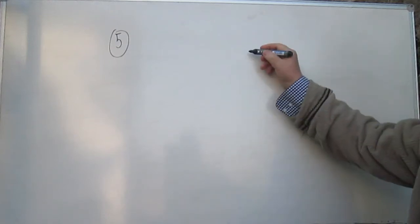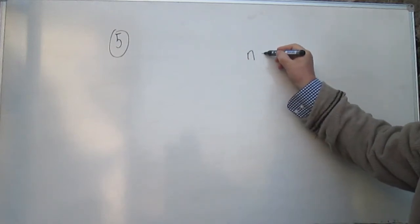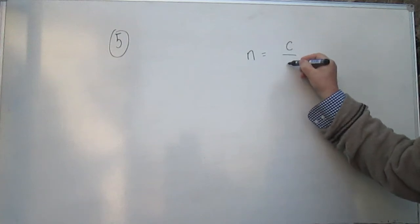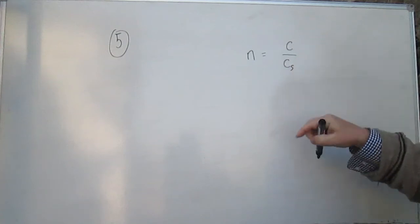OK, question 5 is asking us what actually is happening to the light as it moves into an optically denser medium, like moving from air into glass. If we start with the definition of the refractive index, we have n is equal to c over cs. In other words, that's the velocity of light in a vacuum divided by the velocity in the denser medium.